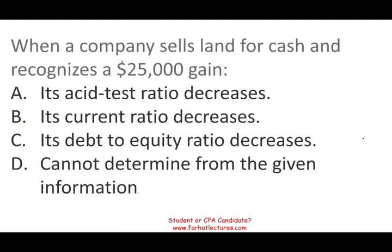Let's take a look at the first question. When a company sells land for cash and recognizes a gain of $25,000, what would happen? We are given four answer choices. My strategy on the CPA exam: for the majority of questions, you should be able to eliminate two choices immediately. If you have a basic understanding of the information, you should be able to eliminate two choices. Let me illustrate this for every question.